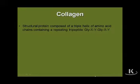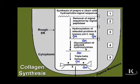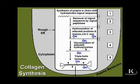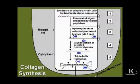Collagen is a structural protein that consists of a triple helix of amino acid chains, each containing a repeating tripeptide. Collagen precursors are synthesized within the rough endoplasmic reticulum inside a fibroblast or myofibroblast. After initial synthesis, the Golgi apparatus undergoes hydroxylation — requiring vitamin C — and glycosylation. Finally, a triple helix is formed after modification in the Golgi apparatus.